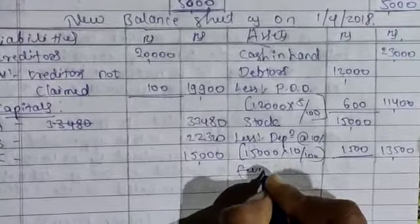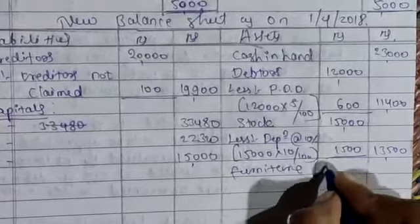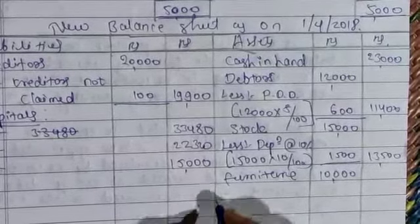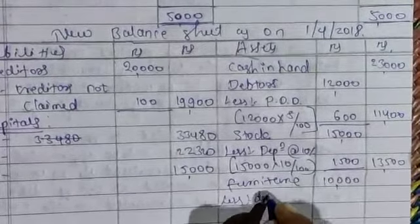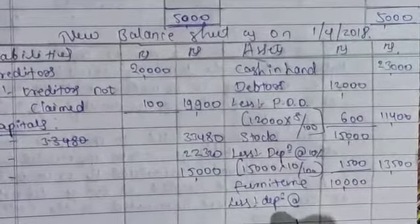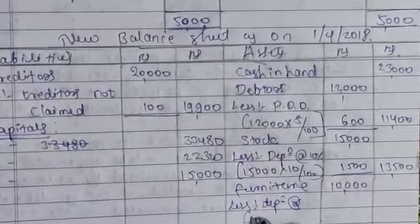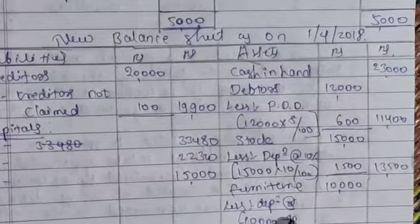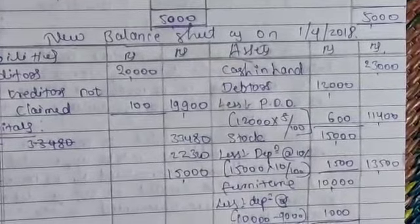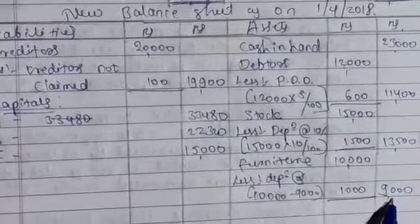Next asset from the old balance sheet is furniture. For furniture also an adjustment is there, so take it into the inner column. Furniture value from the old balance sheet is 10,000. And the adjustment is depreciation only — no rate is given, just the depreciation amount is given, that is 1,000. So that becomes 9,000 — it is the revalued amount of the furniture.